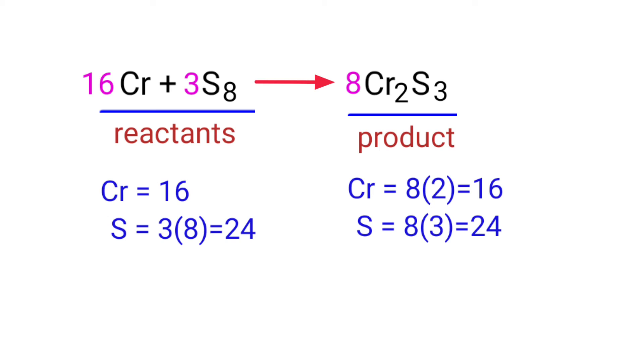The equation is now balanced. There are 16 chromium atoms and 24 sulfur atoms on both sides.